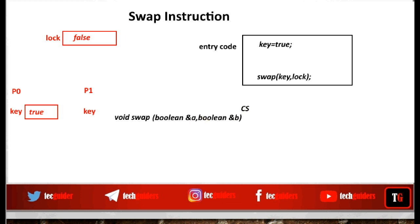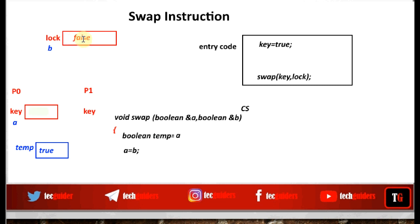Variable a points to the same memory location key is pointing to, and variable b points to the same memory location lock is pointing to. Then boolean temp equals a — this transfers the content of a (key) to a temporary boolean variable temp. Then a equals b transfers the content of b (lock) to the key variable. Then b equals temp transfers the content of temp back to lock. So we received a false value from lock and transferred the true value from key to lock.